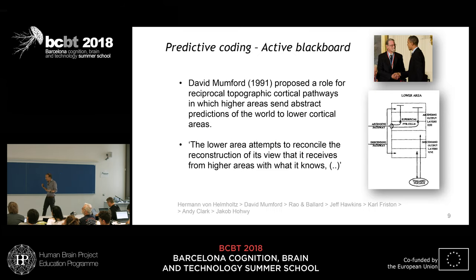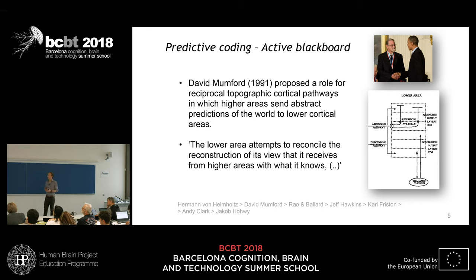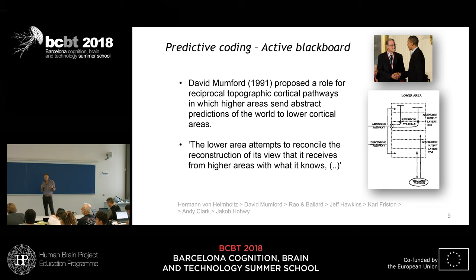In the early 1990s, David Mumford is one of the forefathers of the predictive framework. He proposed a role for reciprocal topographic cortical pathways in which higher areas send abstract predictions of the world to lower cortical areas, so lower areas attempt to reconcile the reconstructions they receive from higher areas with what is known. The internal models have some kind of representation of world knowledge and use this to make predictions and see how good these predictions are, to then create better internal models.